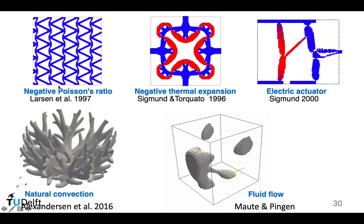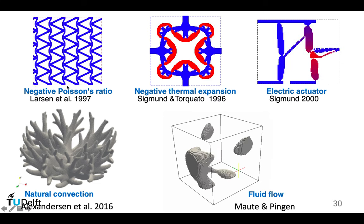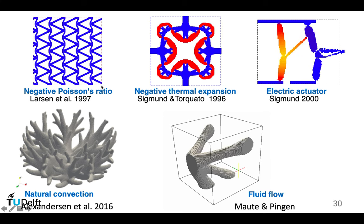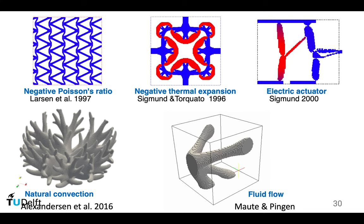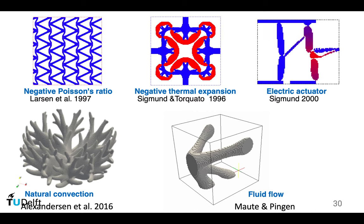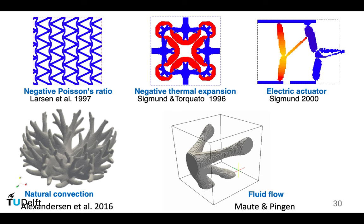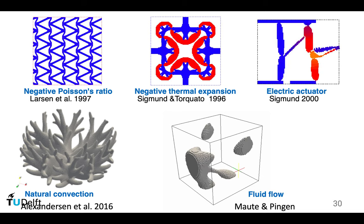On the top left is optimization of material with negative Poisson's ratio, also called auxetic material. Normally material has a positive Poisson's ratio, meaning if you compress the material in the x direction it will expand in the y direction — this is as expected. But with negative Poisson's ratio, if you compress along the x direction it also shrinks in the y direction, which is counter-intuitive.